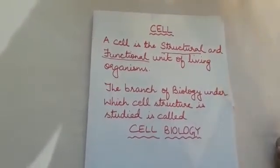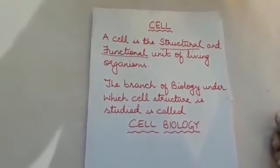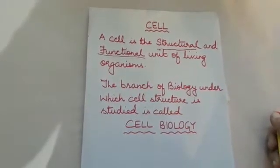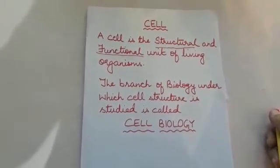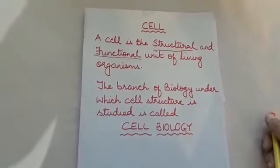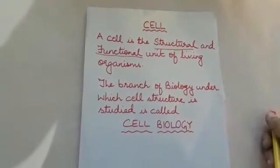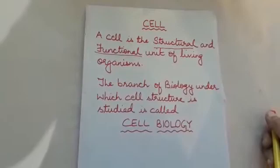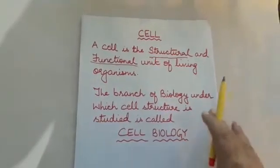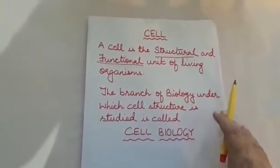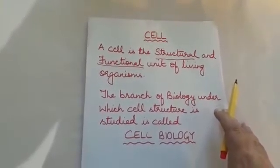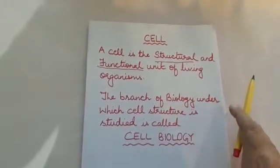We can compare this with the example of a building. A building is a collection of rooms, and rooms are a collection of walls. But what about a wall? A wall is a collection of bricks. So overall, the smallest part of which a building is made up of is a brick. In the same way, specifically when we talk about multicellular organisms, the smallest living structures of which they are made up of is a cell. That is why the cell is called the structural unit of life.